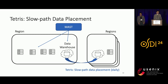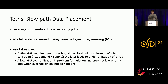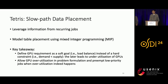Concretely, MAST has a slow-path component called Tetris, which optimizes table placement on a daily basis. Tetris is Meta's internal product. Tetris leverages information from existing recurring training jobs—their input tables and GPU demand—and models table placement as a mixed integer problem, which includes an objective function to minimize and a number of constraints that must be satisfied. Please refer to our paper for the detailed problem formulation.